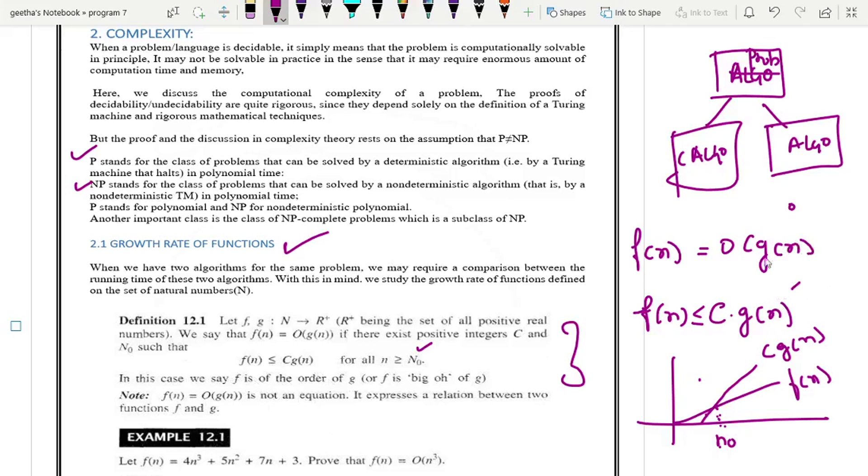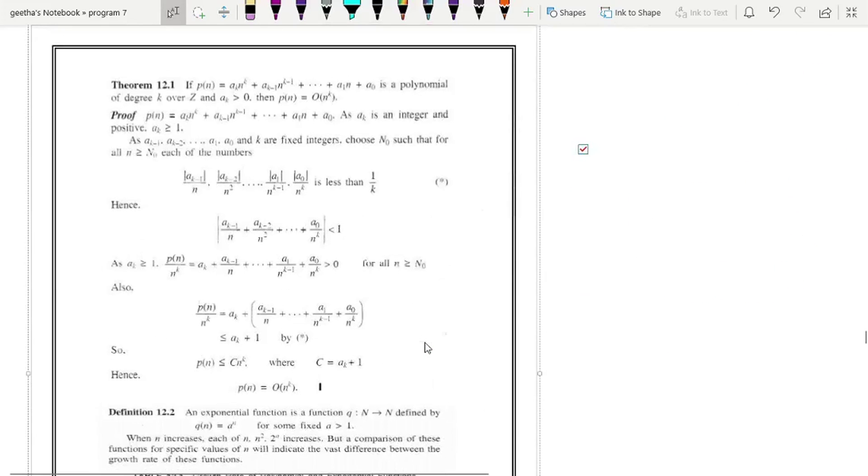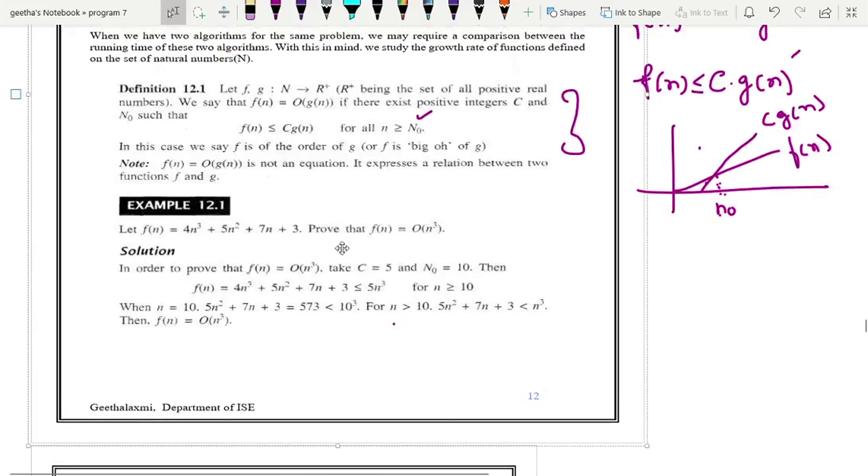Now, we will see a problem. f of n equal to 4n cube plus 5n square plus 7n plus 3. Now, prove that f of n equal to order of n cube.